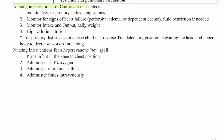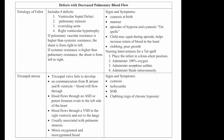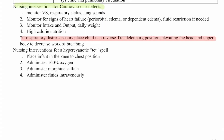Nursing interventions for cardiovascular defects include monitoring vital signs, respiratory status, and lung sounds. Watch for signs of heart failure such as periorbital edema or dependent edema, fluid restriction if needed, monitor I&Os and daily weights, and provide high-calorie nutrition. If respiratory distress occurs, place the child in reverse Trendelenburg position, elevating the head and upper body to decrease the work of breathing. For a hypercyanotic TET spell: place the infant in knee-to-chest position, administer 100% O2, administer morphine sulfate, and administer IV fluids.